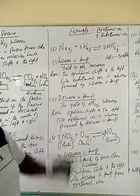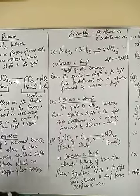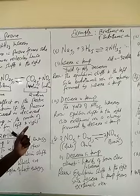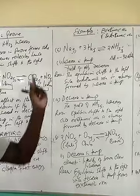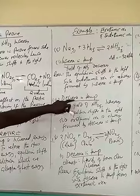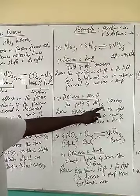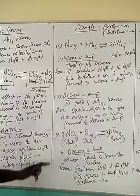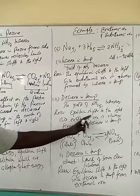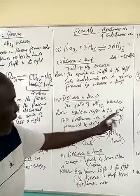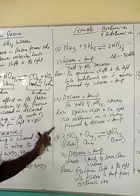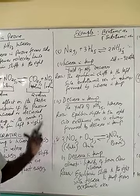A decrease in temperature: if the temperature is decreased, then the system must be adjusted so that there is an increase in temperature to fill the gap which has been created. So the yield of ammonia increases. The reason is that a decrease in temperature will make the equilibrium shift to the right, since the exothermic reaction is always favoured by a decrease in temperature.